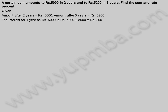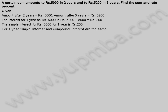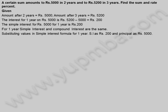The interest for one year on 5,000 rupees is 5,200 minus 5,000, which equals 200 rupees. The simple interest for 5,000 rupees for one year is 200 rupees. For one year, simple interest and compound interest are the same.